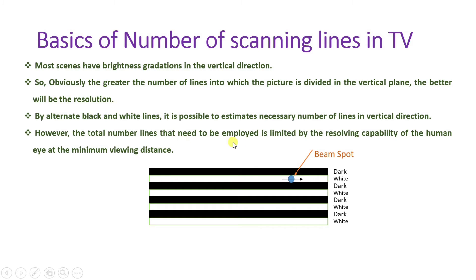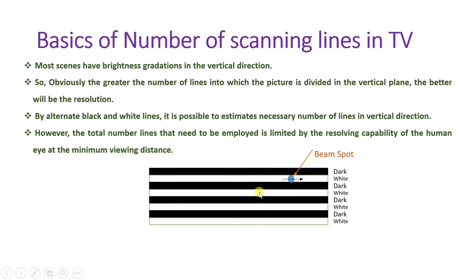The total number of lines that need to be employed is limited by the resolving capability of the human eye at the minimum viewing distance. The resolving capability of the human eye is highest at one minute of arc in terms of angle. We will use this to calculate the number of lines.